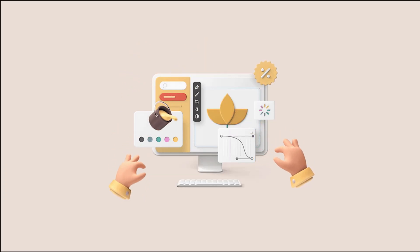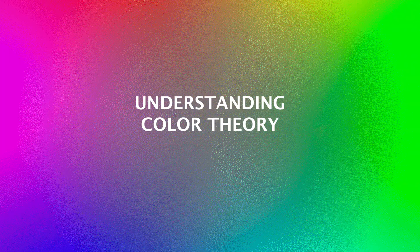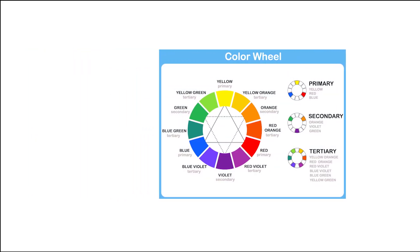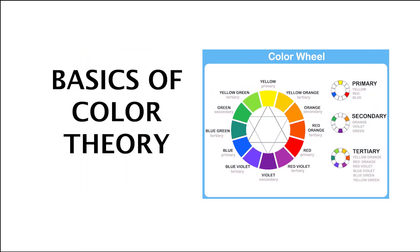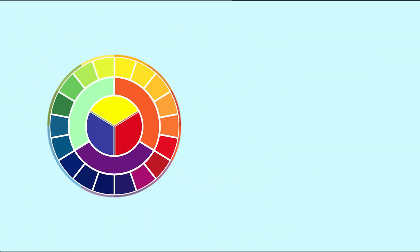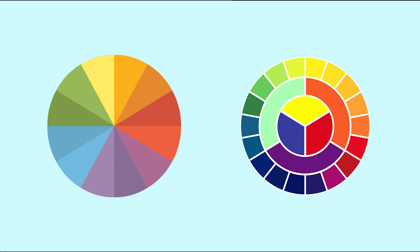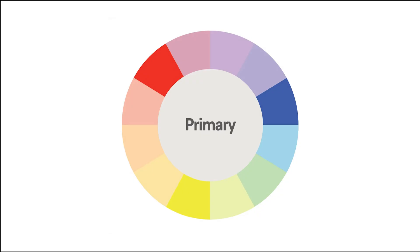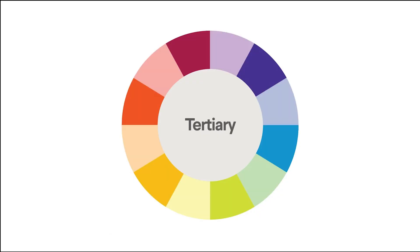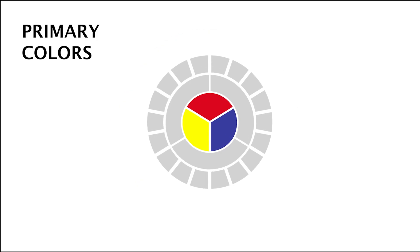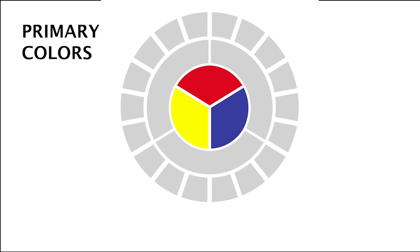First, let's talk about the basics of color theory. The color wheel is a circular diagram of colors that helps us understand the relationships between different hues. It's divided into primary, secondary, and tertiary colors. Primary colors are the three main colors — red, blue, and yellow. These colors can't be created by mixing other colors.